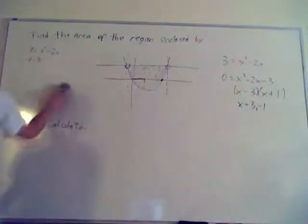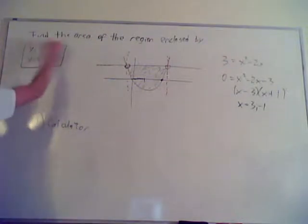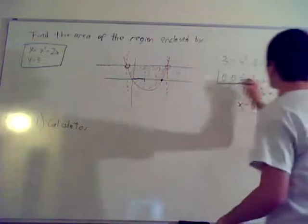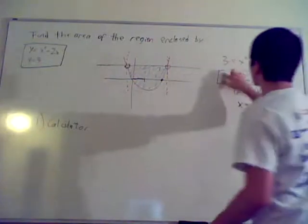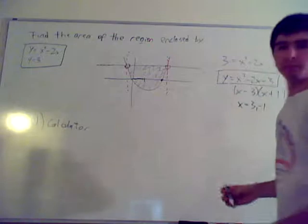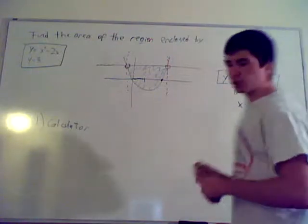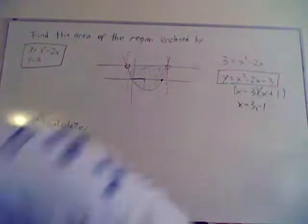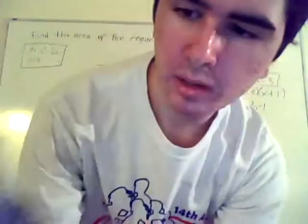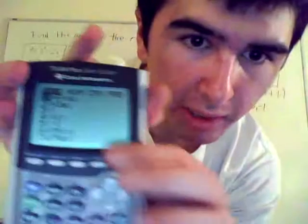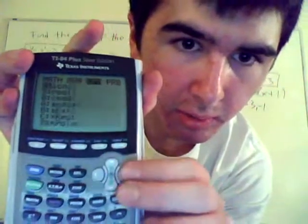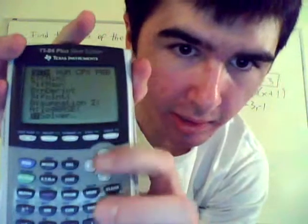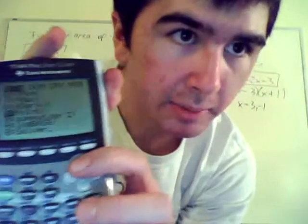The way you do it on your calculator is you combine these two functions into one function. This is your combined function right here — the 0 becomes y equals the combined expression. Now what you do is you go to the Math button on your calculator. You go all the way down and you go to FNINT.